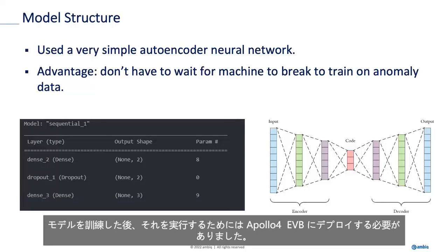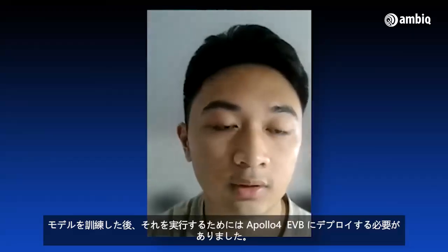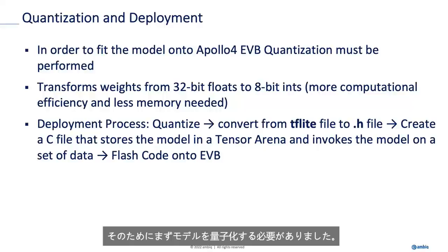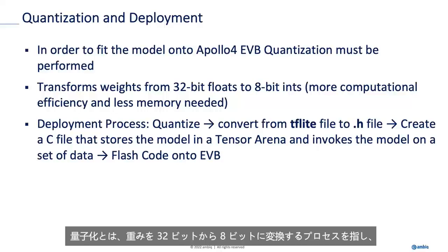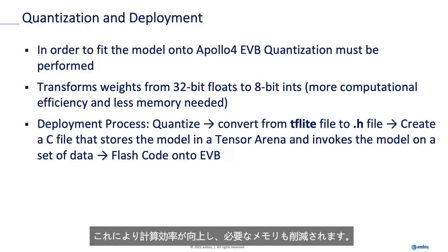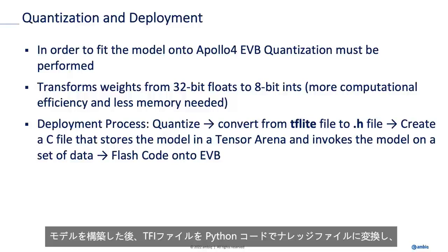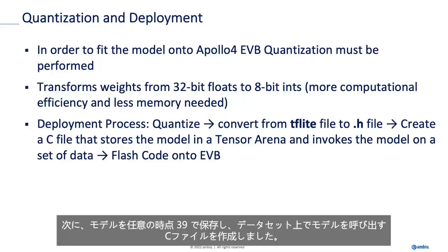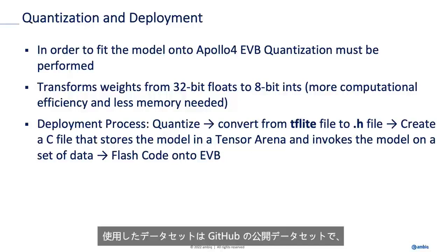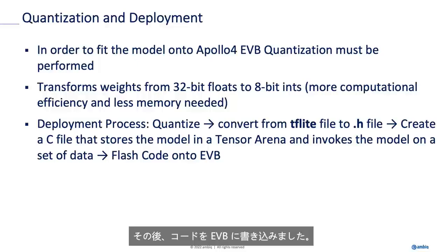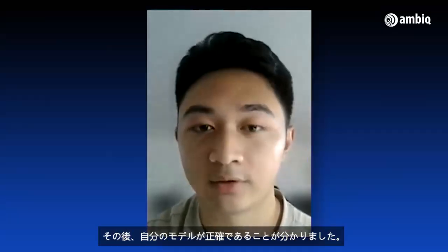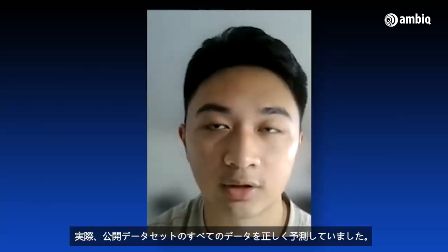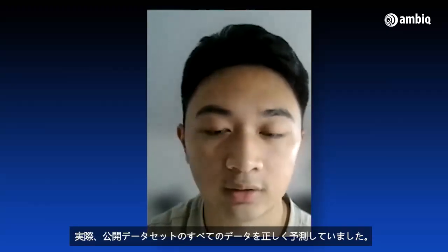After training my model, I deployed it onto the Apollo 4 EVB. To do that, I first had to quantize my model. Quantization refers to the process of transforming weights from 32-bit floats to 8-bit ints, which allows for more computational efficiency and less memory usage. After quantizing, I converted the TFLite file to a .h file with Python code, then created a C file that stores the model in a tensor arena and invokes the model on a set of data. I flashed the code onto the EVB and found that my model was accurately predicting all the data correctly from the public dataset.